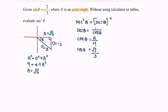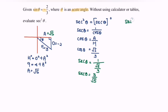In order to find sec² θ, substitute into sec θ. We have sec θ equals 3 over square root of 5. So for sec² θ, we will have 3 over square root of 5, bracket squared, which gives us 9 over 5 for sec² θ.